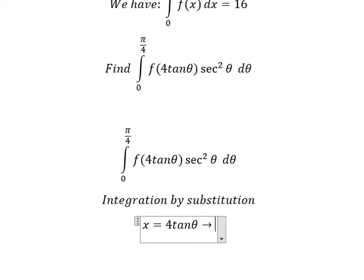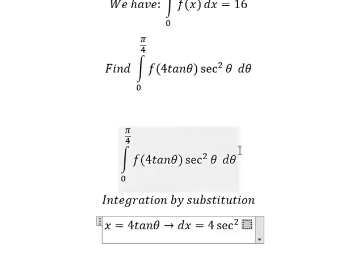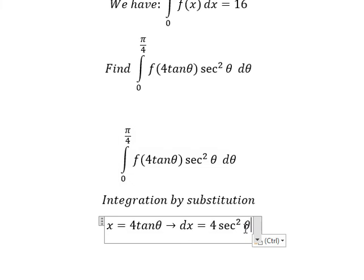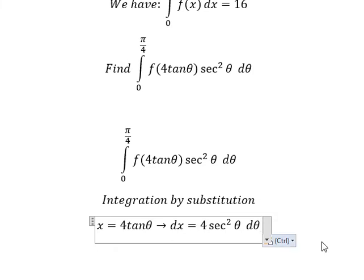If we take the first derivative for both sides, you get dx equals 4 sec²(θ) dθ. We don't have the 4 in here, so we divide both sides by 4.